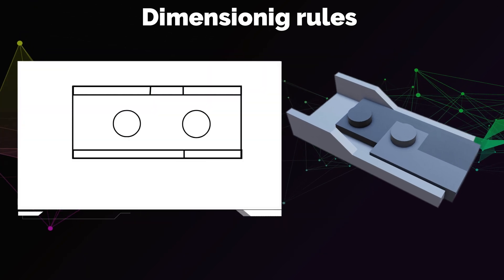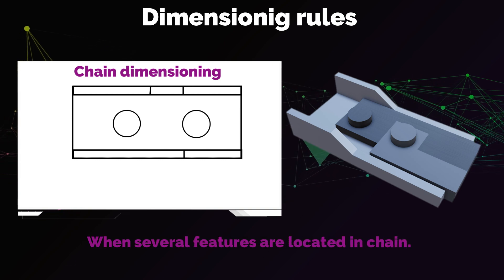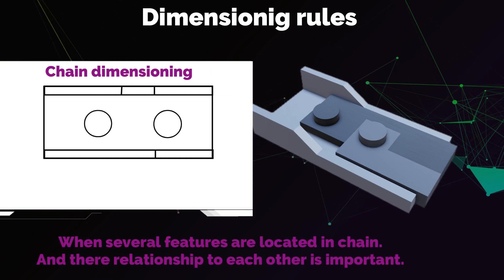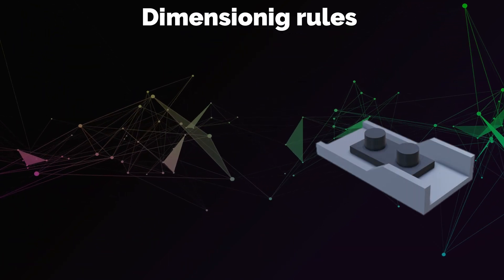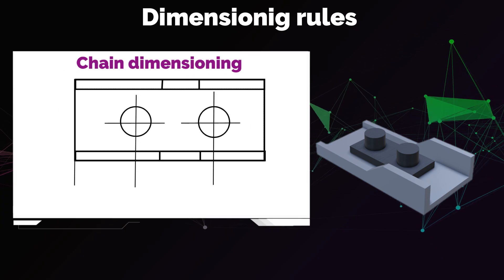One other dimensioning method is chain dimensioning. This method is used when several features are located in a series or chain, and their relationship to each other is important. For example, if the shafts that are to be mounted in these holes are connected to each other, you can use chain dimensioning to show the distance between each hole and the next.